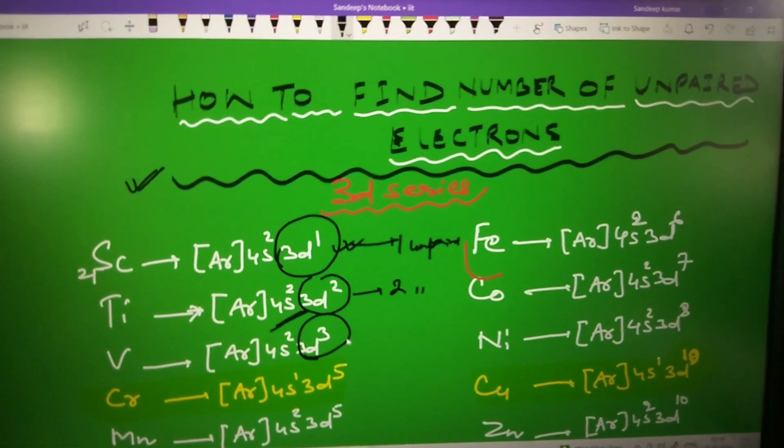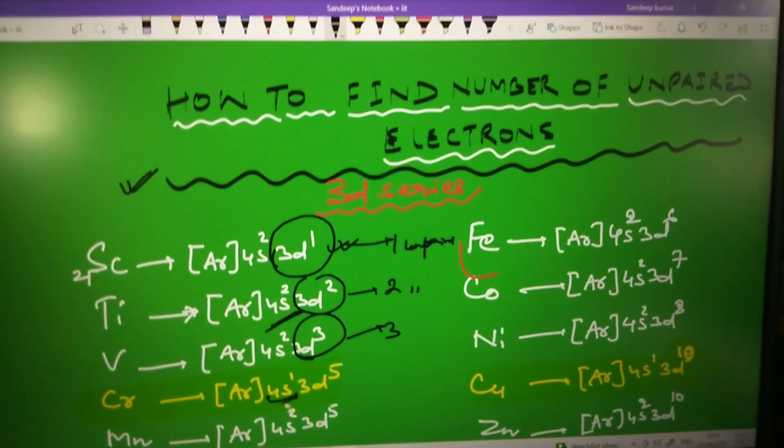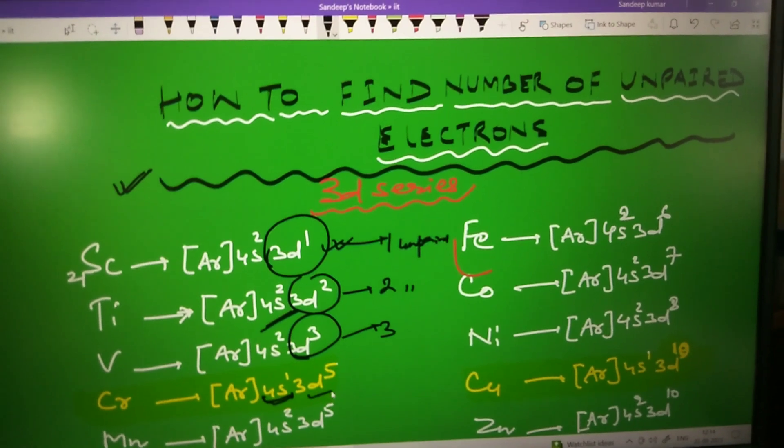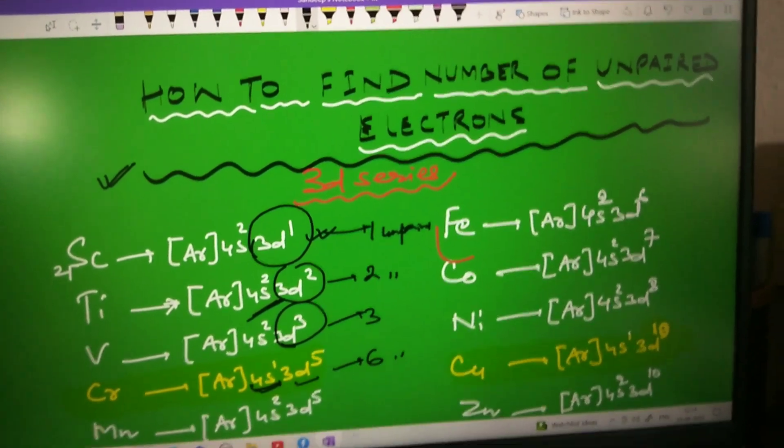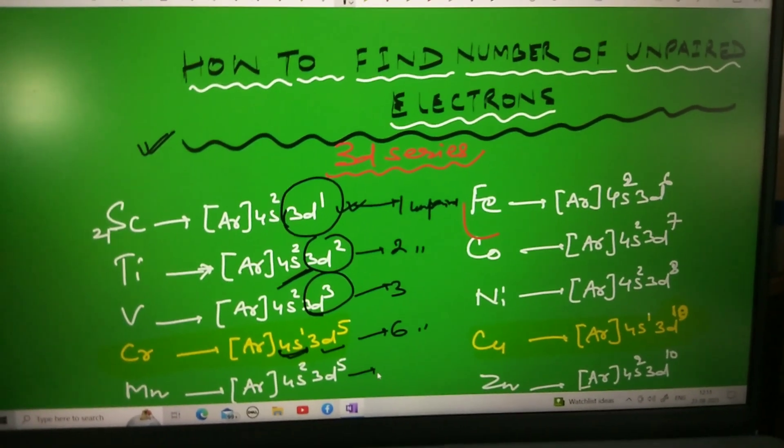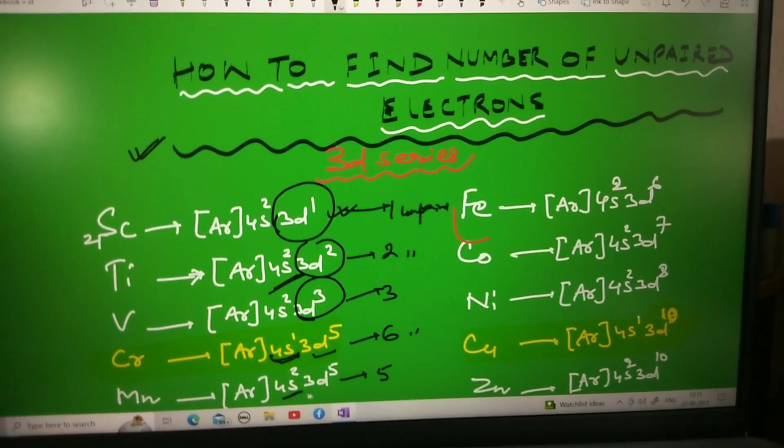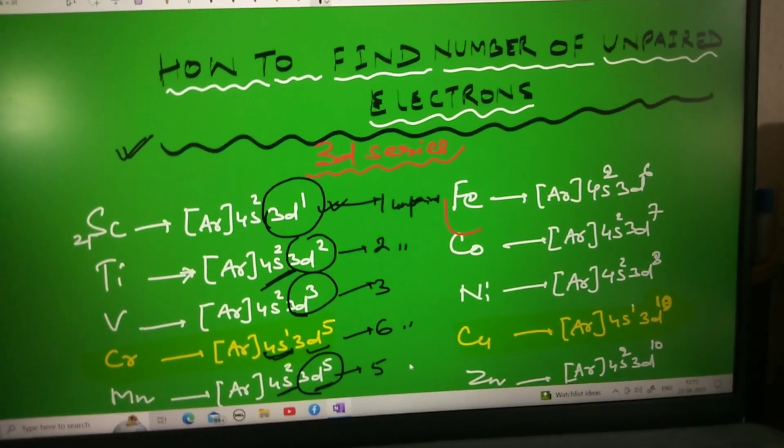In chromium you will find that 4S also has 1 unpaired and 3D has 5 unpaired, so total 6 unpaired electrons are there. In manganese there are 5 unpaired because 4S2 is filled, so only D5 has 5 unpaired electrons.